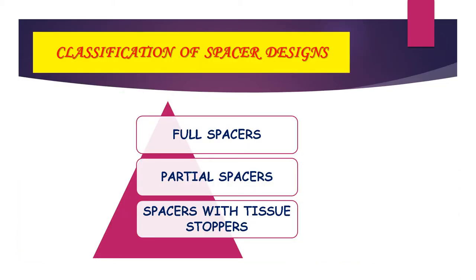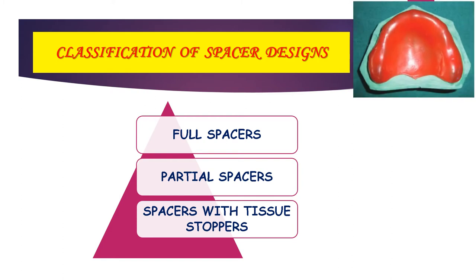Coming to the classification of spacer designs. The first one is the full spacer. It is made to cover the whole residual ridge except the post-palatal seal area (PPSA) in the maxilla and the retromylohyoid area in the mandible, thus providing space for impression material.